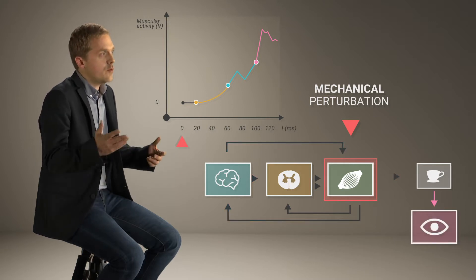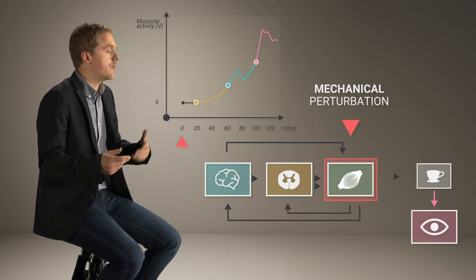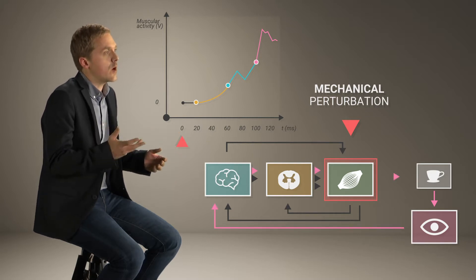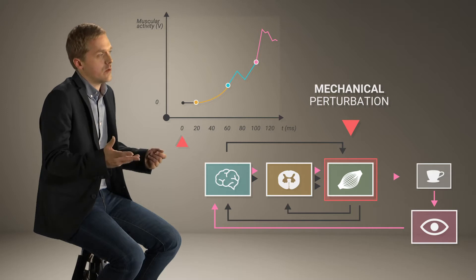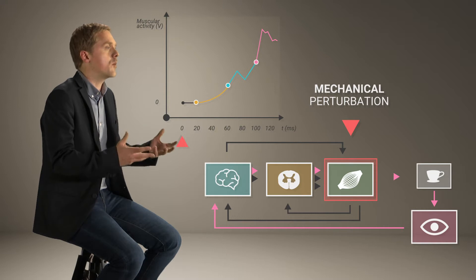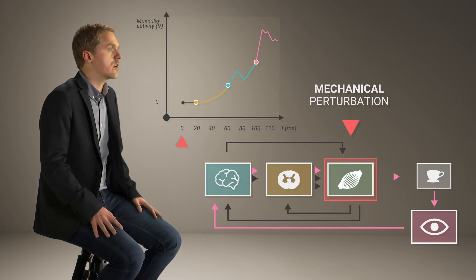When you do eye movements towards visual stimuli or even during eye-hand coordination, perturbations elicit very rapid but automatic responses which are reflexes, followed by more sophisticated responses supported by a more complex neural network.